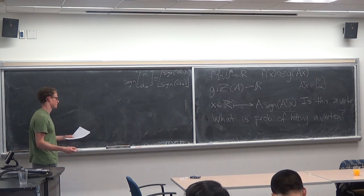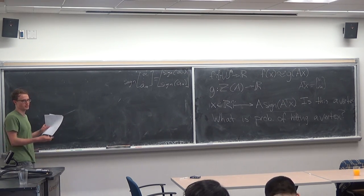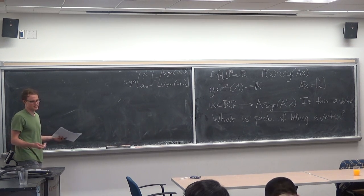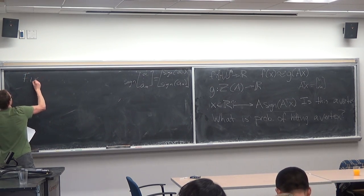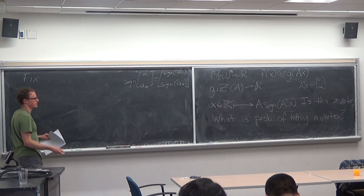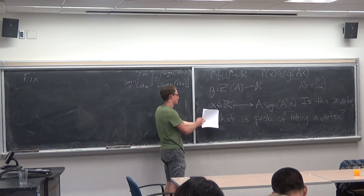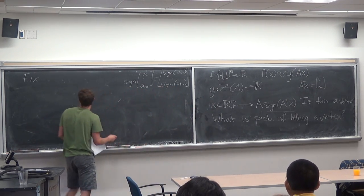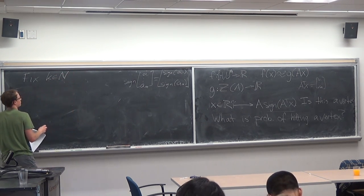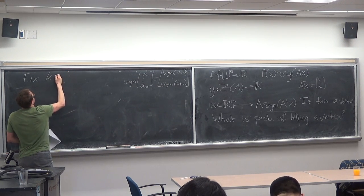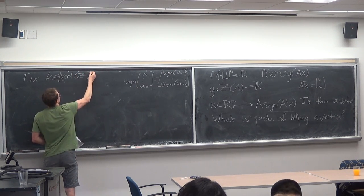Let me write down the algorithm — it really belongs in quotes, because it's like: pick a bunch of points, plug into the function, what do you get? There are two different ways to do it. You can fix the number of sample points — choose p x's and plug them into this function — or you can fix k in the natural numbers, less than or equal to the number of vertices of your zonotope z.